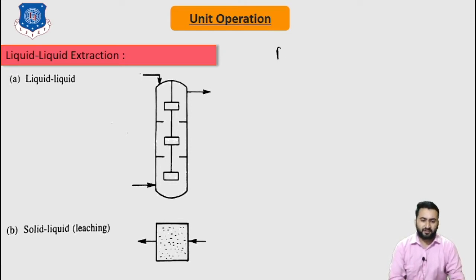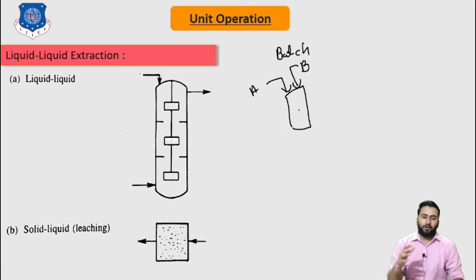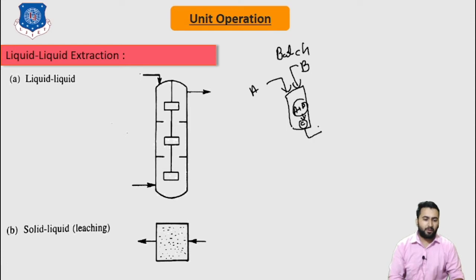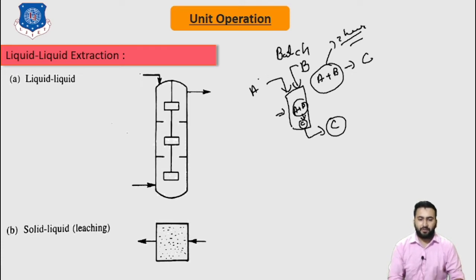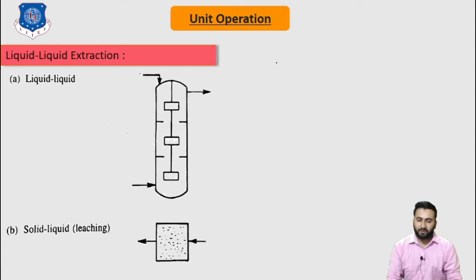What do we mean by the batch process? In batch process, there will be one vessel in which we add chemicals and allow them to settle down and react with each other to produce product C, and then we take out product C after some period of time. For example, A plus B gives C. To react A and B, a required time of 2 hours is needed; we settle down both reactants and wait for 2 hours, then take out the product. This is known as the batch process.